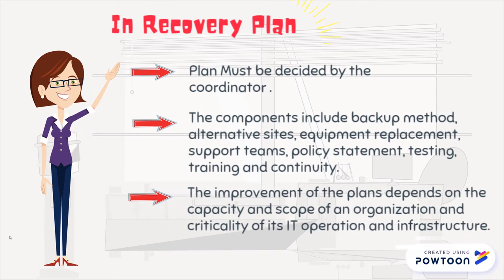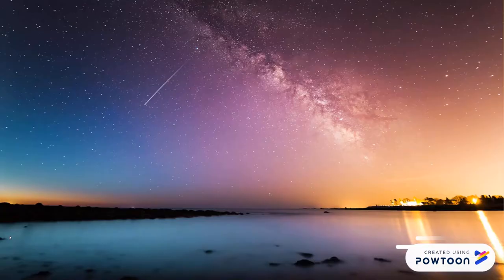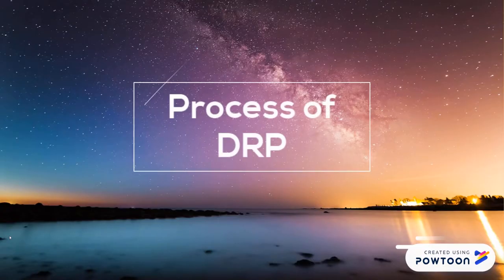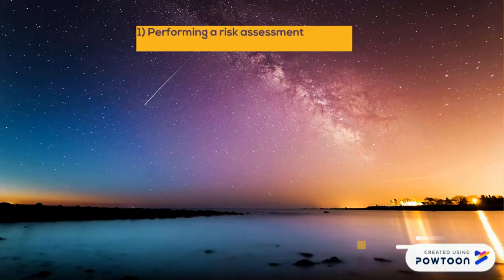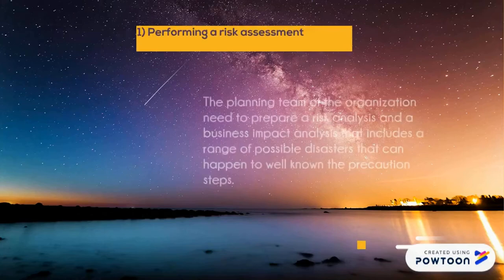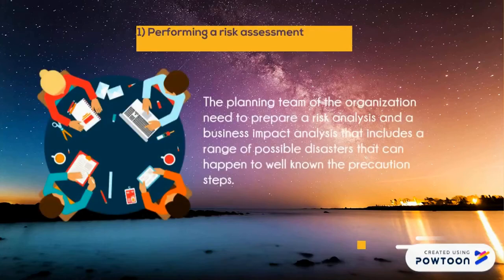The improvement of the plans depends on the capacity and scope of an organization and the criticality of its IT operations and infrastructure. The first process of DRP is performing a risk assessment. The planning team needs to prepare a risk analysis and a business impact analysis that includes a range of possible disasters that can happen, to understand the precaution steps.